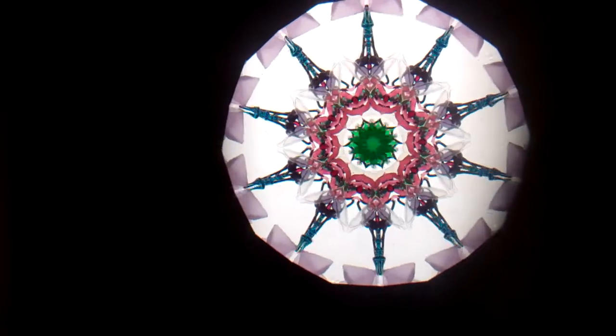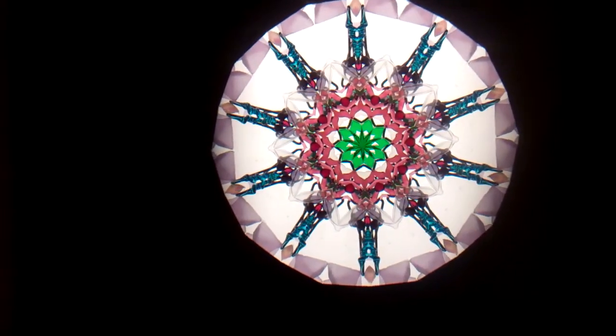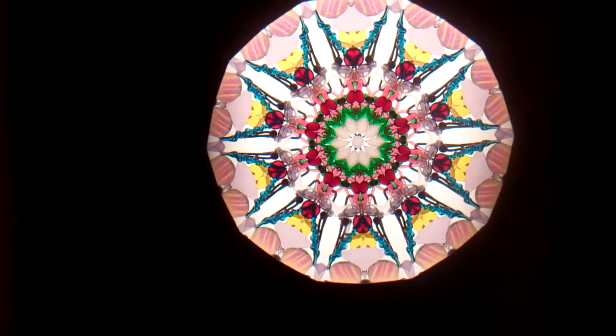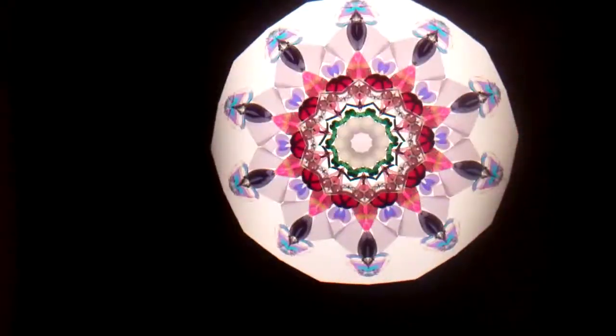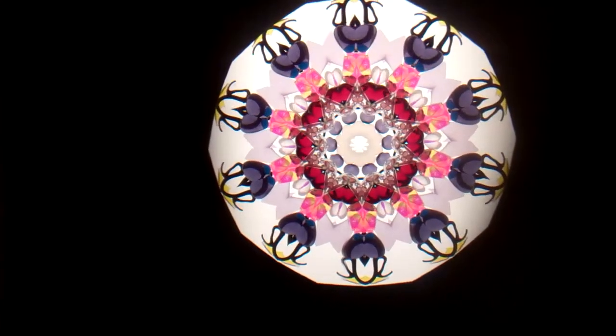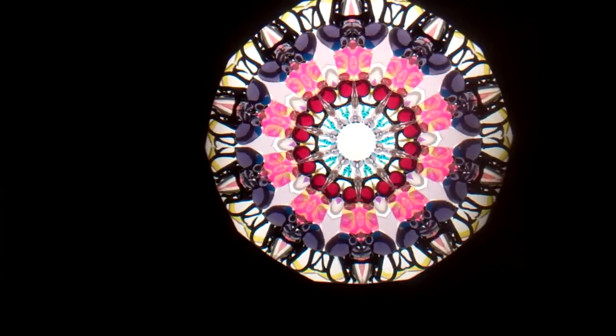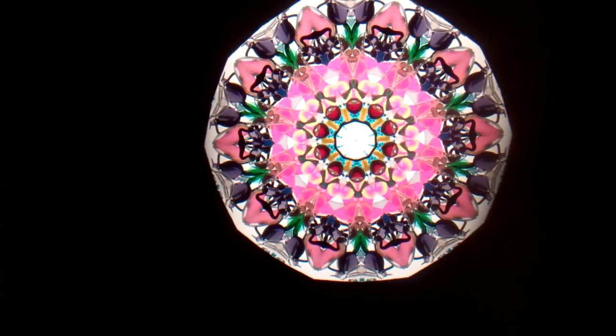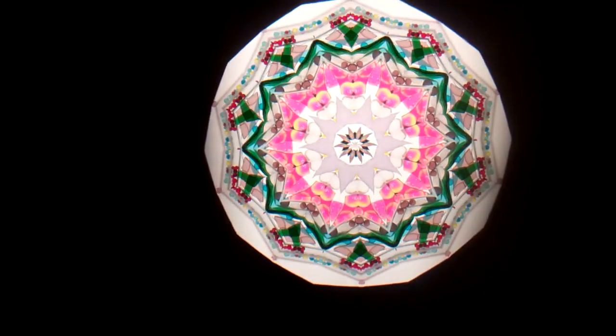Hello, I'm Jean at Kaleidoscopes2U and right now you're seeing interior images through Coronascope number 10 of 15. This is a new series by Charles Karadimos and this one is in a lavender and green color palette for the interior image.